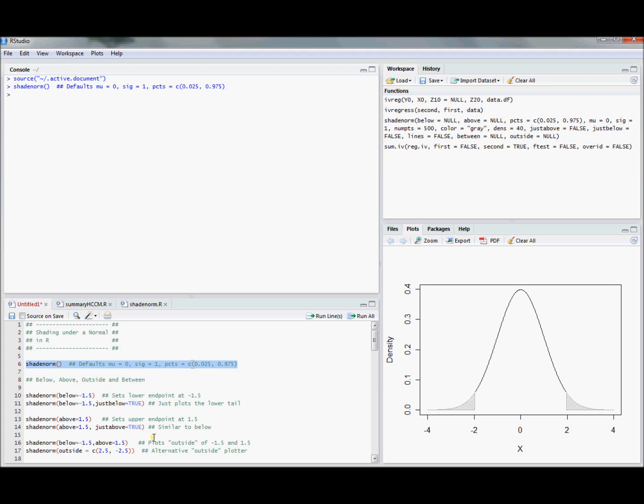You might want a little bit more flexibility, and my function allows you more flexibility. With an argument here called below, you can specify where you want to start shading below. Let's run this and see how that works. I said let's set that lower endpoint and shade below negative 1.5, and the only thing it changed was the lower endpoint. The upper endpoint stayed as the default.